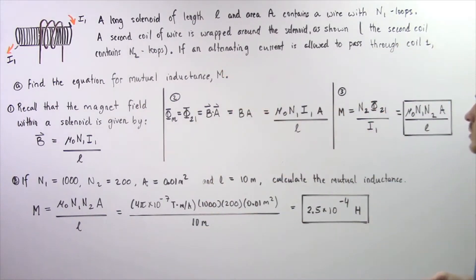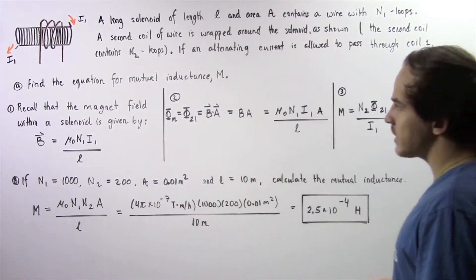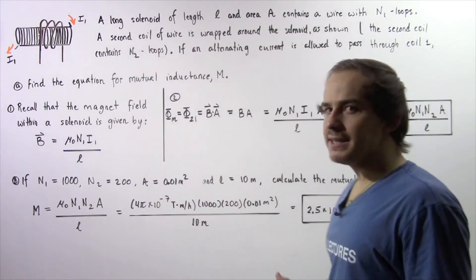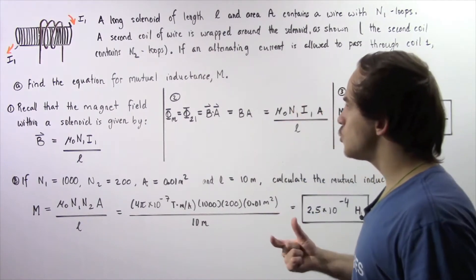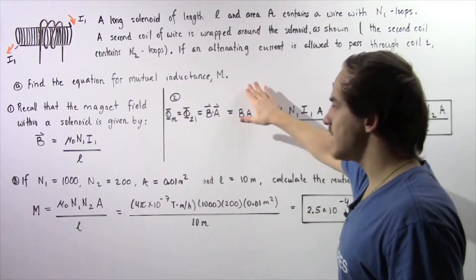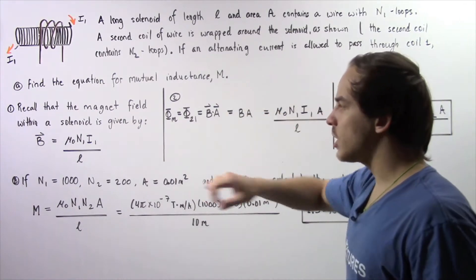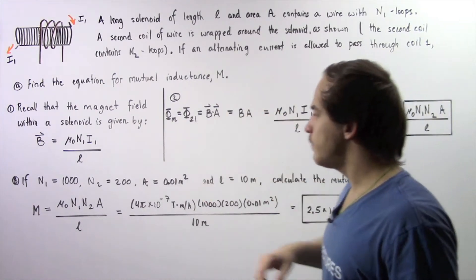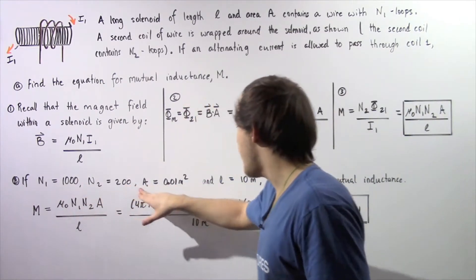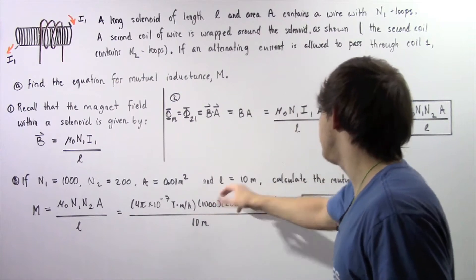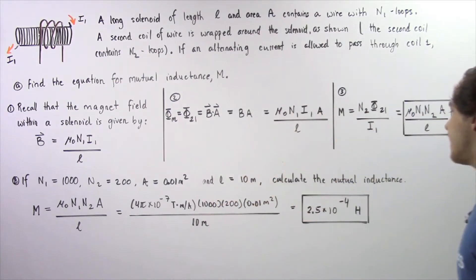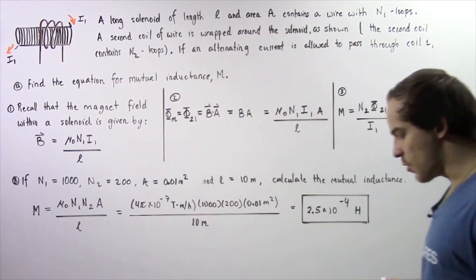So if an alternating current is allowed to pass through coil number 1, in part A find the equation for mutual inductance M, and in part B, if we know N1, N2, A, and L, we want to calculate the mutual inductance.